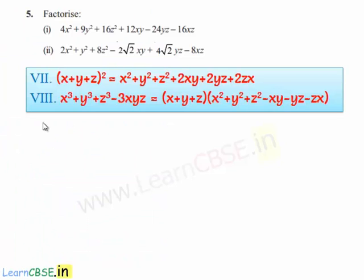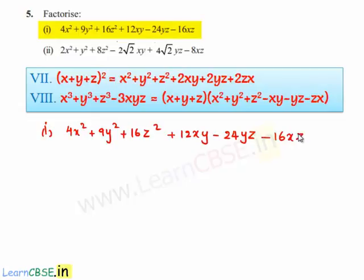Coming to the fifth problem, factorize. The first one given to us is 4x square plus 9y square plus 16z square plus 12xy minus 24yz minus 16xz.